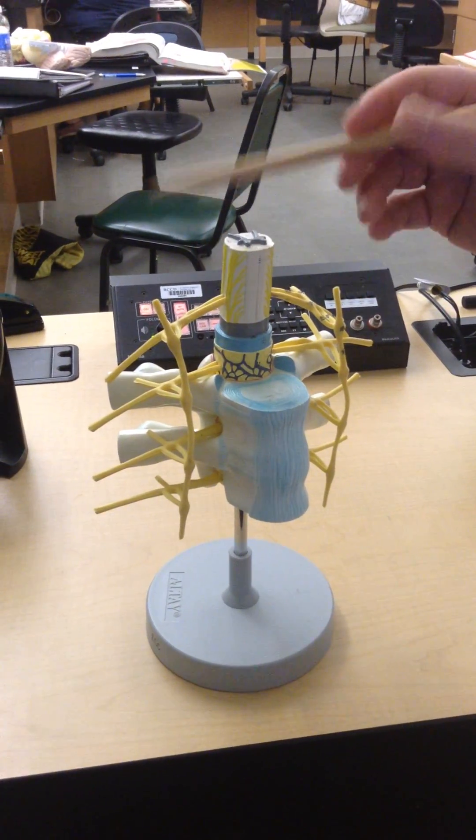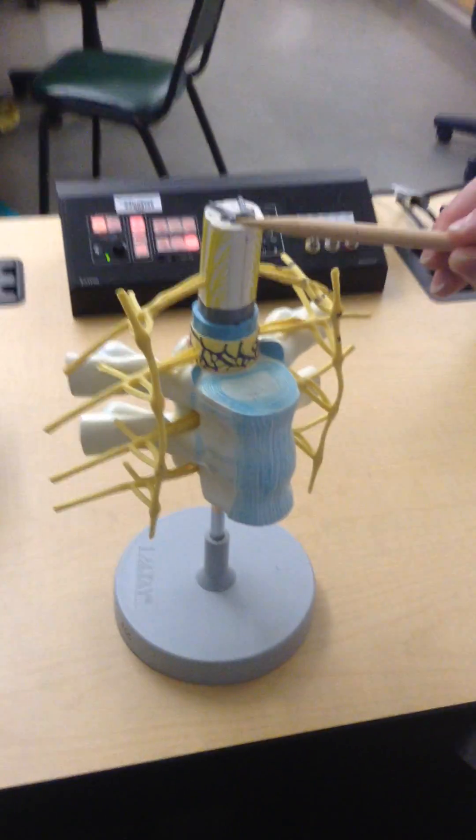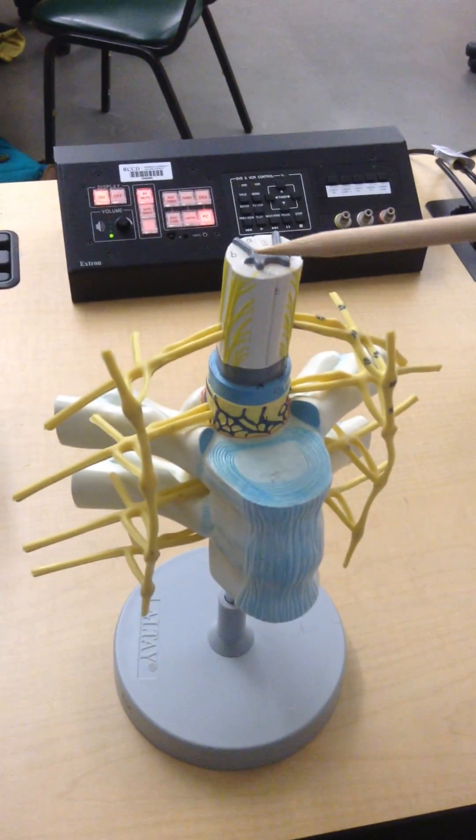So when we look at structurally what's going on, this is the lateral horn, one more time, this is the ventral horn, where the neurons are going to exit from the lateral horn,